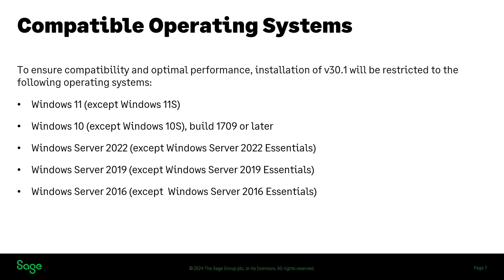Something to be mindful of before upgrading: if you have multiple machines with Sage installed and one or two might be on a different operating system that falls outside of this list, they will not be able to upgrade the Sage software to version 30.1. Remember, everyone must be on the same version of Sage 50 accounts. You are going to find plenty of information on our install hub about checking your systems.